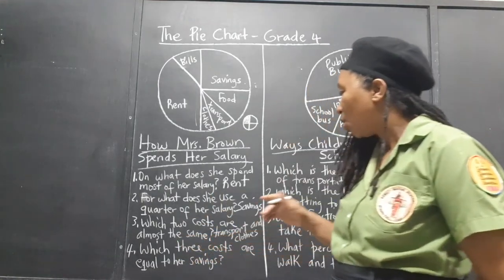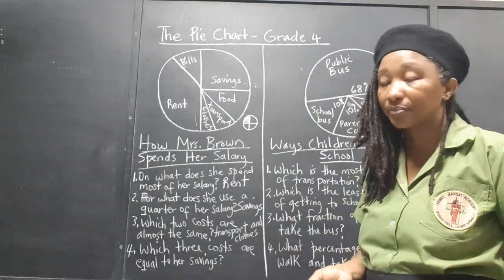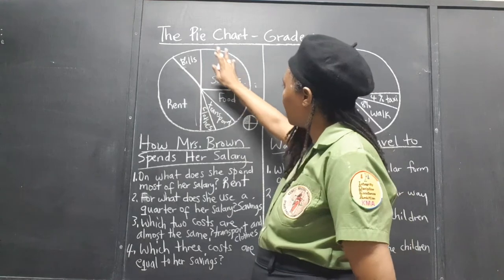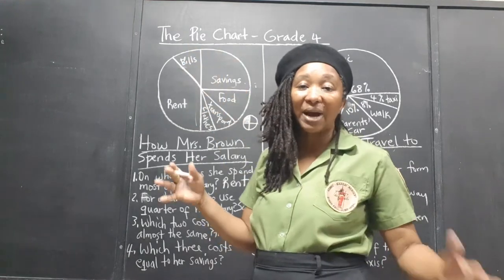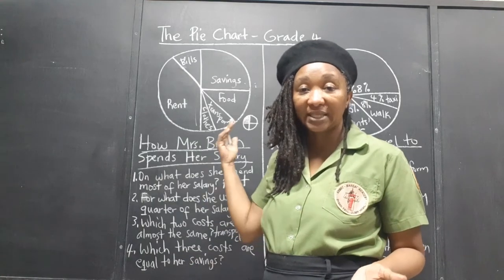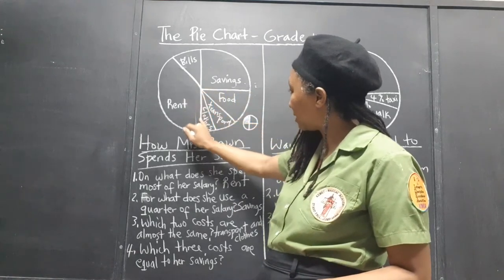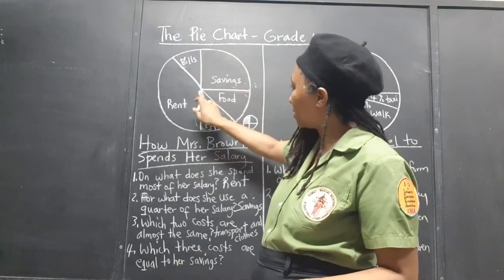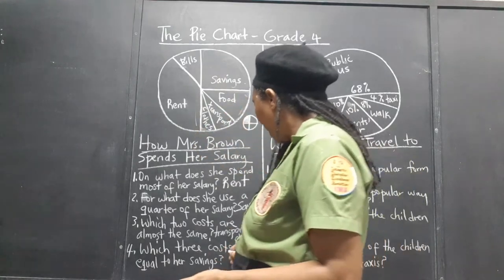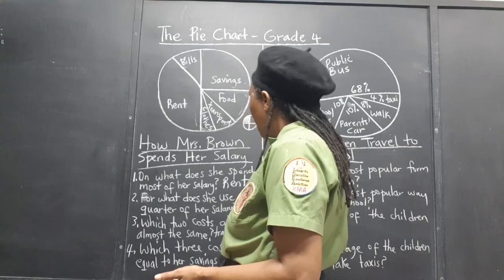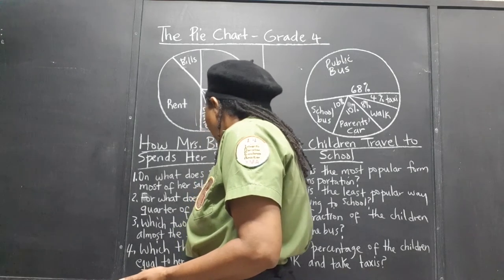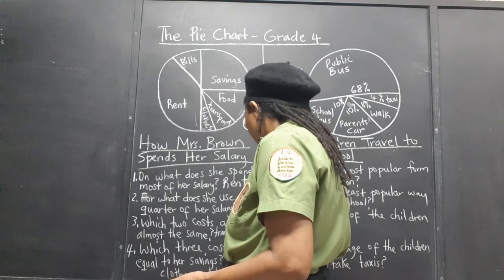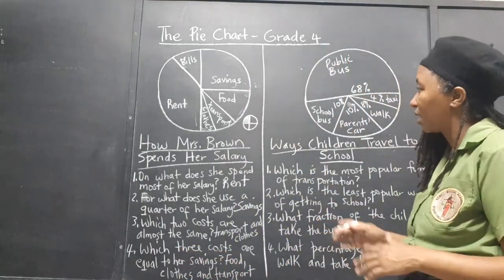Number four: which three costs are equal to her savings? Remember, savings take up a quarter of the circle. So which three costs, when combined, also take up a quarter of the circle? It would be food, clothes, and transport — together they take up a quarter of the circle, just like savings takes up a quarter.